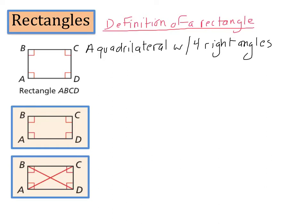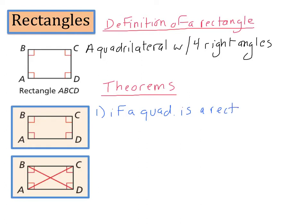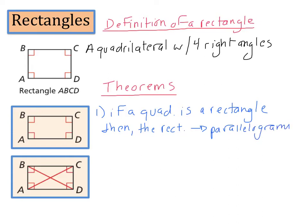Now rectangles have certain theorems, and we're going to go over two of those theorems right here. The first theorem says that if a quadrilateral is a rectangle, then that rectangle is a parallelogram. For this video, instead of spelling out the word parallelogram, I'm going to be drawing a symbol — this symbol means parallelogram.